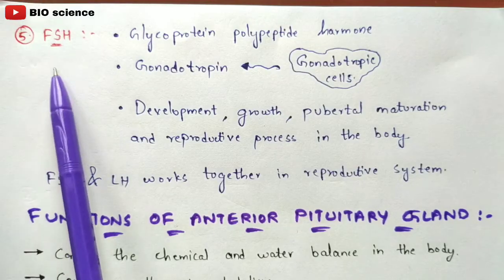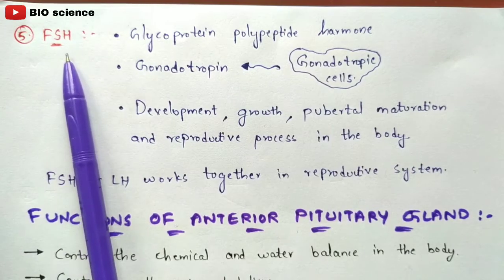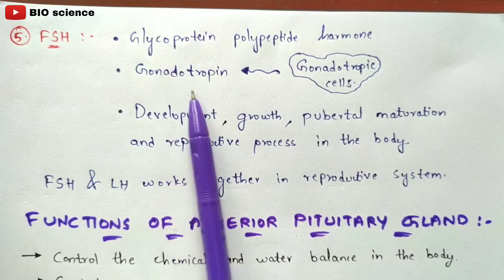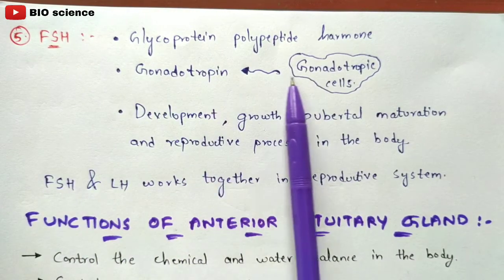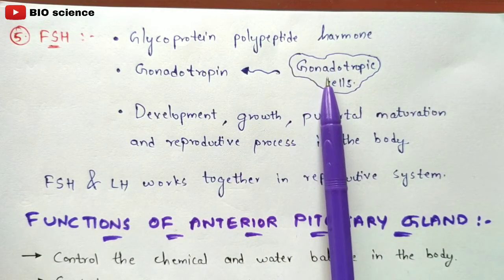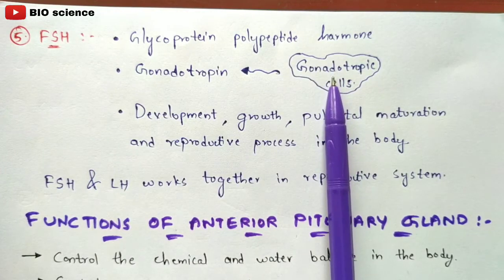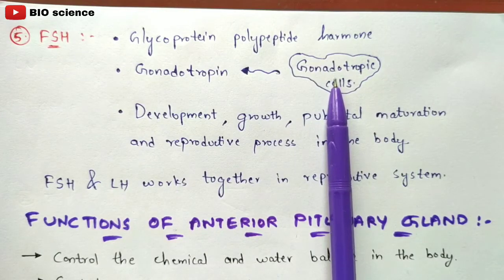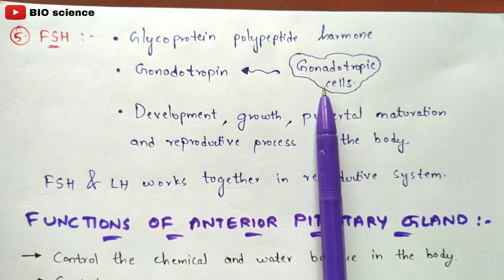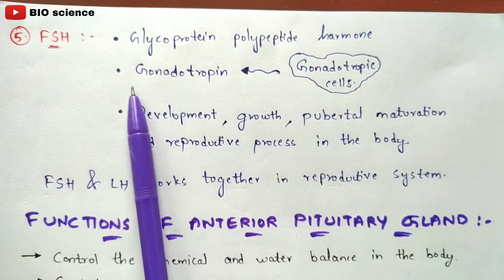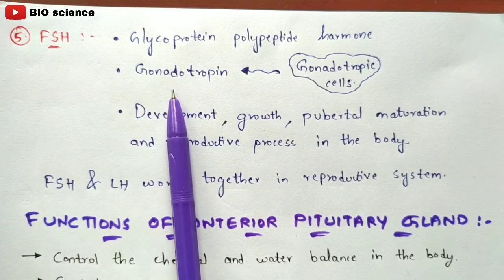The fifth hormone is follicle stimulating hormone (FSH), a glycoprotein polypeptide hormone also called gonadotropin. It is secreted from gonadotropic cells present in the gonads — the sex organs of human beings. In males the gonads are the testes, and in females they are the ovaries. From the gonadotropic cells in these gonads, the gonadotropin (FSH) is produced and released.